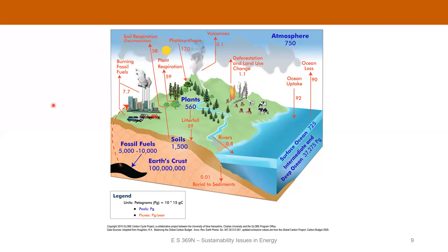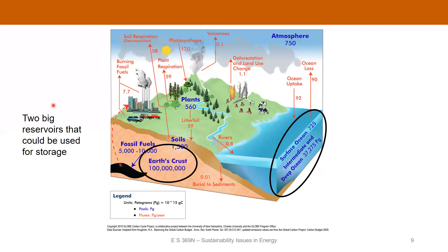Now I want to talk about some of the reservoirs that can be potential carbon storage locations. The two I really want to focus on are the Earth's crust and the ocean, because by far these are the two largest potential reservoirs that could be used to store carbon. So we're going to move forward talking about these — starting with the ocean and how carbon is stored there, and what the implications are.